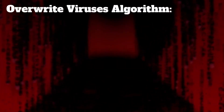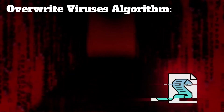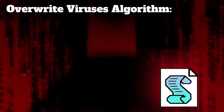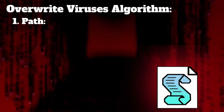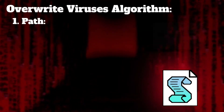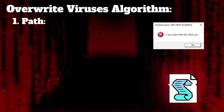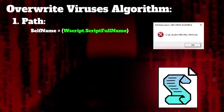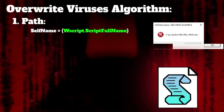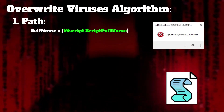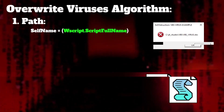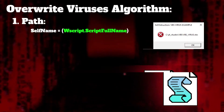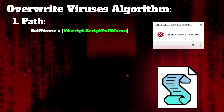The algorithm doesn't change in this case. First, we need the file path to read. In this case, we are going to use the scriptFullName property from the WScript object.